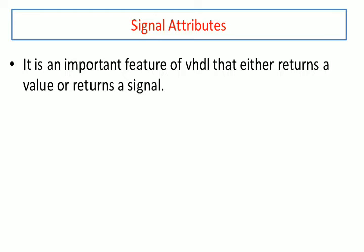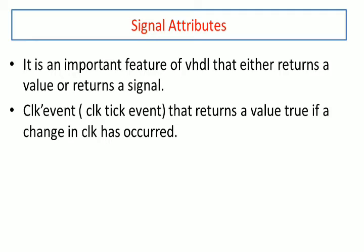An attribute is an important feature of VHDL that is used to return a value or to return a signal. For sequential or combinational circuits, we need certain signals that return values. For example, clock'event is written as clock tick event — it returns a boolean value, either true or false. It returns true if a change in clock has occurred recently.